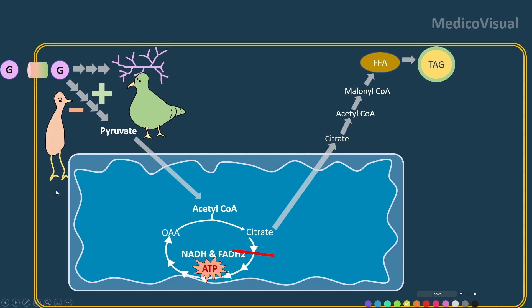too much counter-regulatory hormone, more of this enzymatic machinery will be inhibited and less will be stimulated, because the stimulatory hormone — insulin — is less compared to the inhibitory hormone.